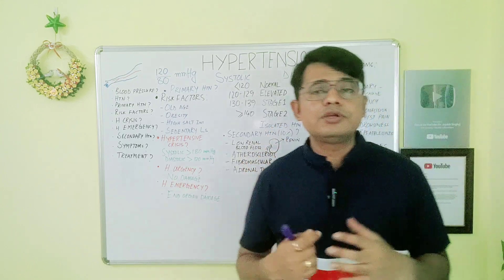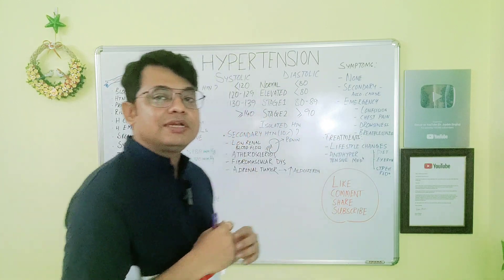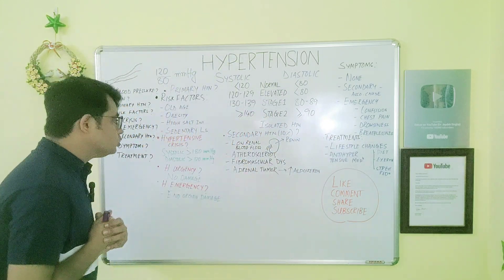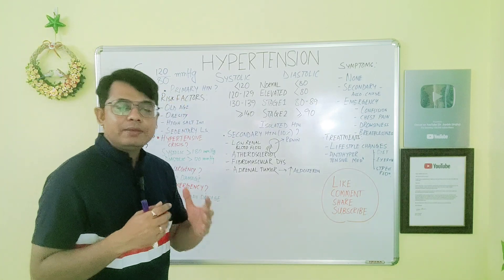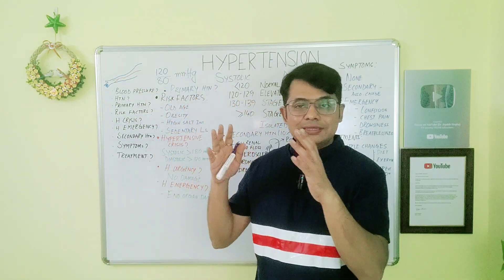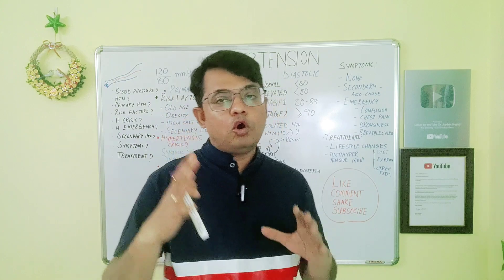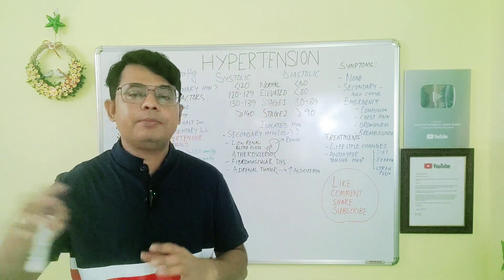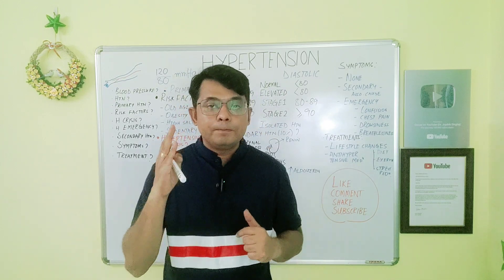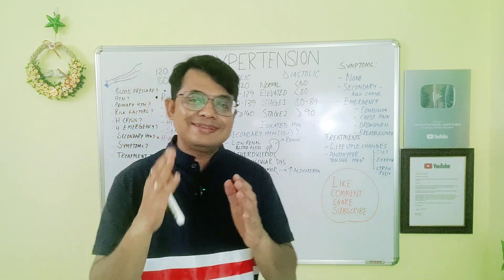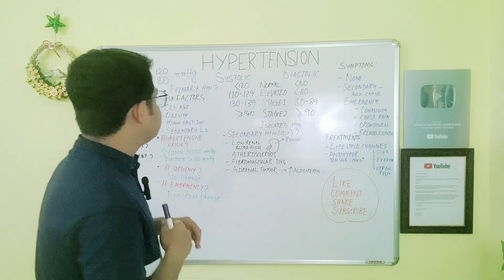Primary hypertension is a condition where there is no obvious or specific identified cause behind the hypertension. When no underlying cause can be identified, that kind of hypertension is known as primary hypertension.